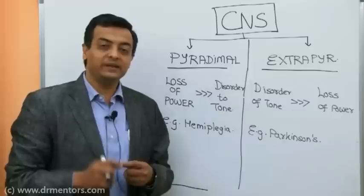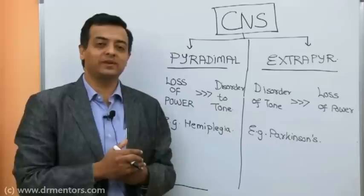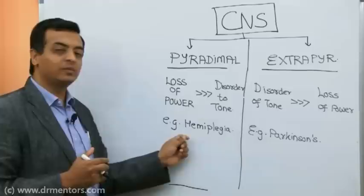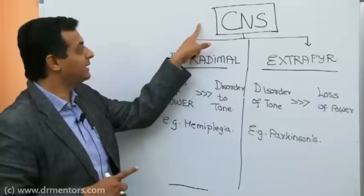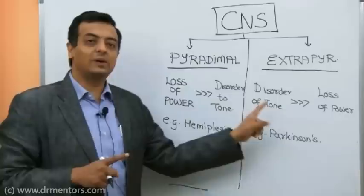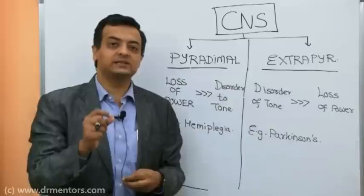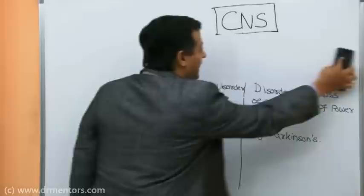In extrapyramidal disorder like Parkinson's disease, the patient is unable to move but on examination power is 4+. The problem is rigidity — hypertonia — not loss of power. This is one of the most important clues for anatomical localization: when power is dominantly affected it is pyramidal disease; when tone is dominantly affected it is extrapyramidal disease.